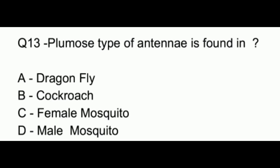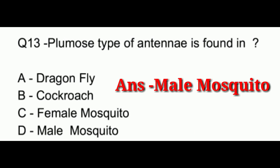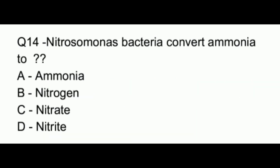Question number 13. Plumose type of antenna is found in: option A, dragonfly; option B, cockroach; option C, female mosquito; option D, male mosquito. The answer to this question is option D, which is male mosquito.